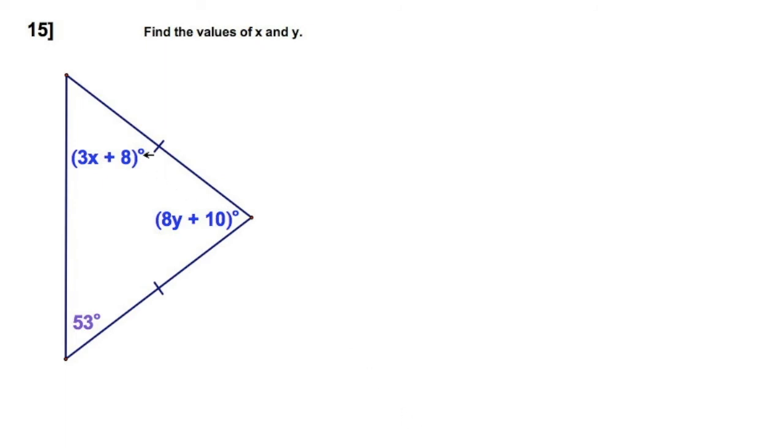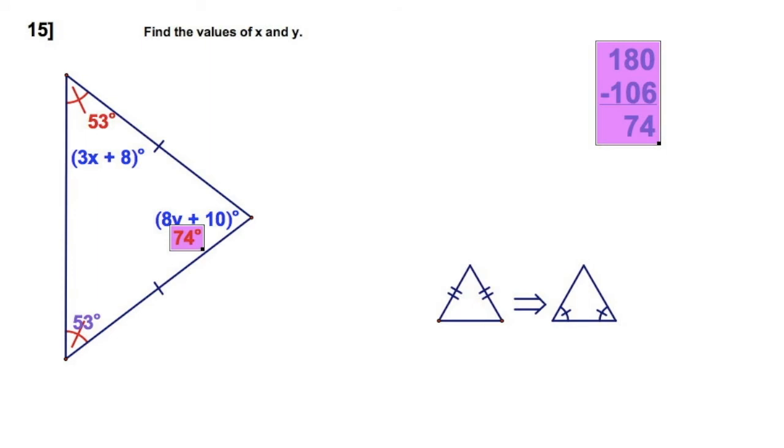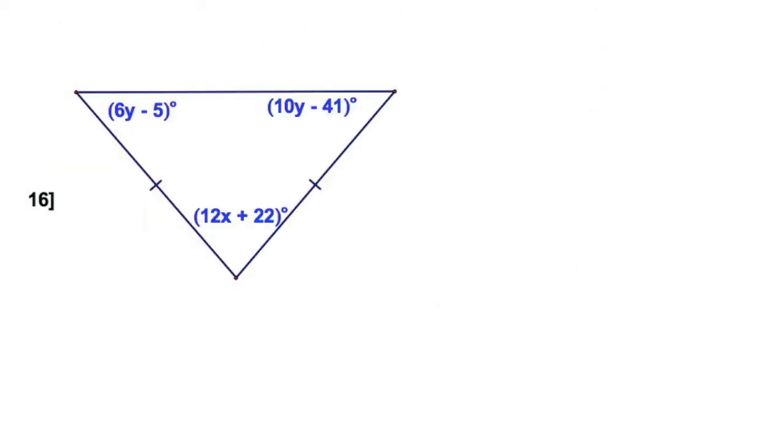Here we go. Find x and y. Well, you've got congruent sides. That means you've got congruent angles. The base angles are congruent. So I've got two congruent angles down there. I'm going to take 98 away from 180. That leaves me 82. Now I'm not going to solve for x and y. I'm just going to tell you that you can do it easy. This equals this. This equals this. Next one.